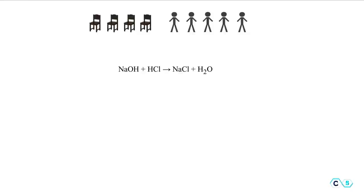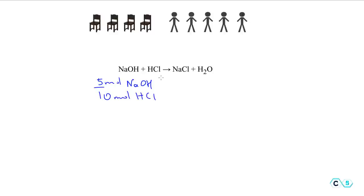For example, looking at the reaction of sodium hydroxide with HCl, if we have five moles of sodium hydroxide and ten moles of HCl, then sodium hydroxide is going to be the limiting reactant because we have less of it than HCl. However, the situation is not always this simple because sometimes the coefficients are different, and it wouldn't just matter which one is less or more.